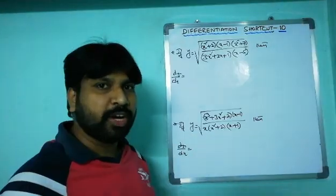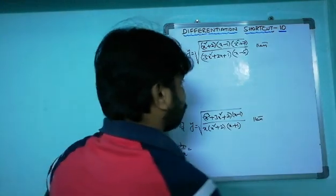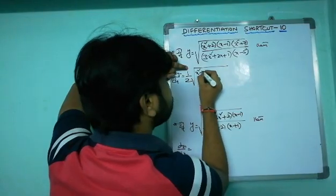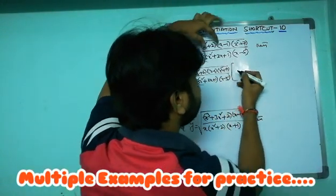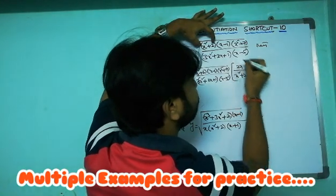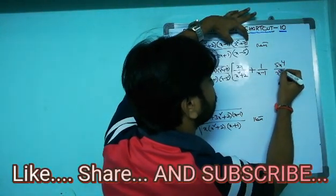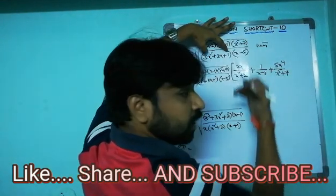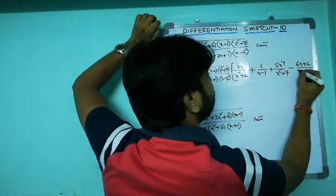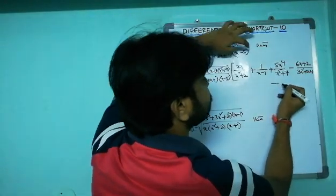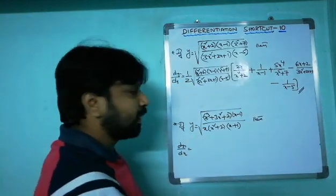Even quadratic functions are no problem with this shortcut. For example, if y = √[(x²+2)(x−1)(x⁵+7) / (3x²+2x+1)(x−5)], then dy/dx = (1/2) · √[same expression] · [2x/(x²+2) + 1/(x−1) + 5x⁴/(x⁵+1) − (6x+2)/(3x²+2x+1) − 1/(x−5)].